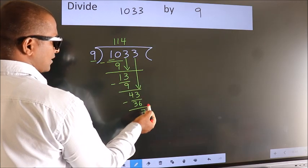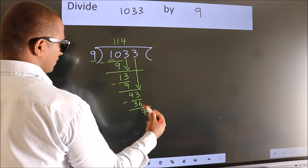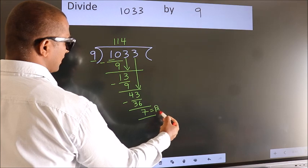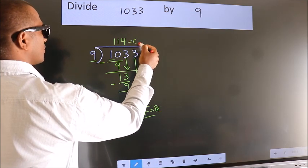No more numbers to bring it down. So we stop here. This is our remainder. This is our quotient.